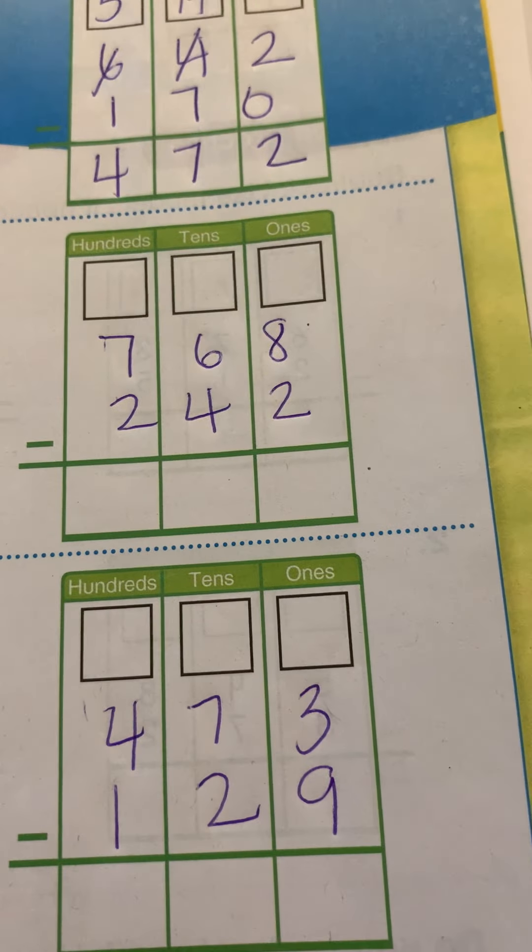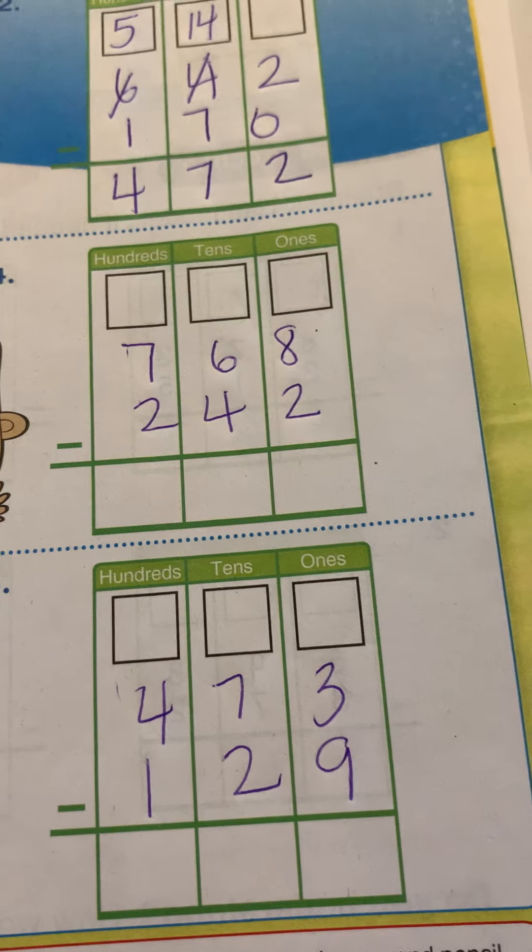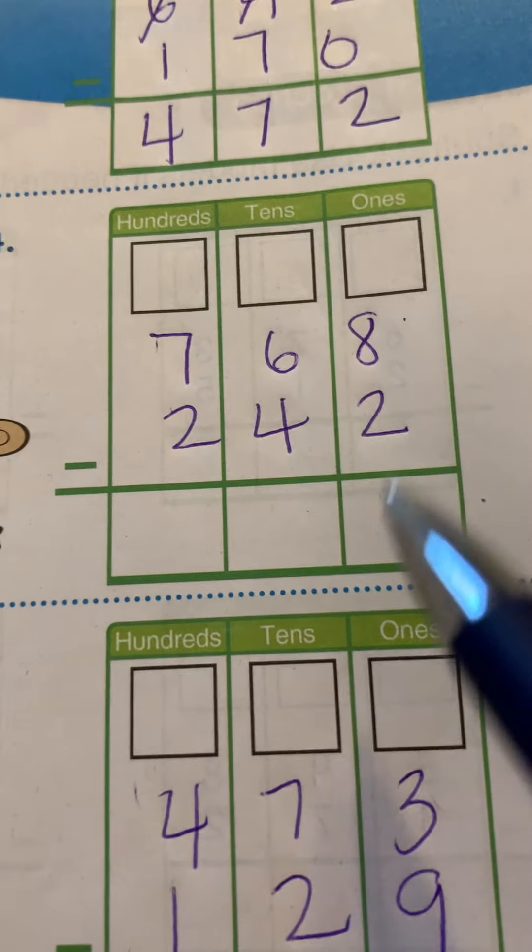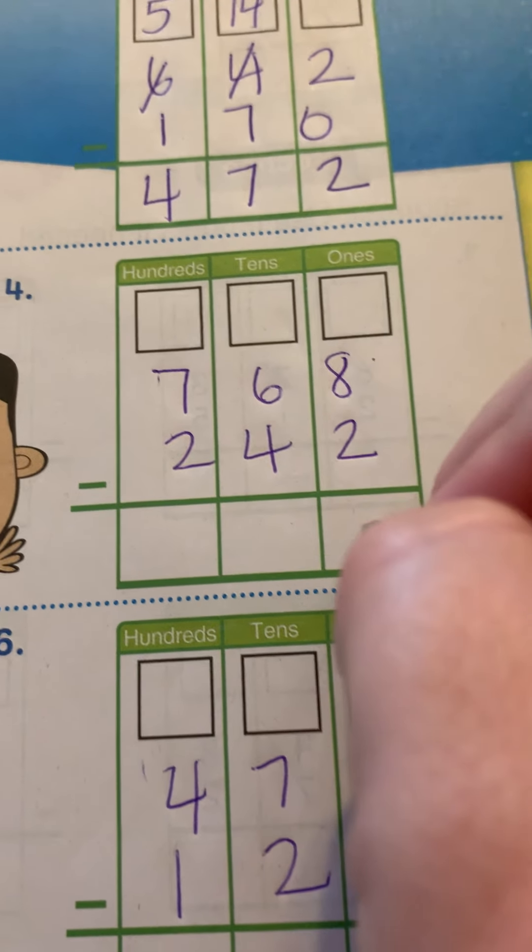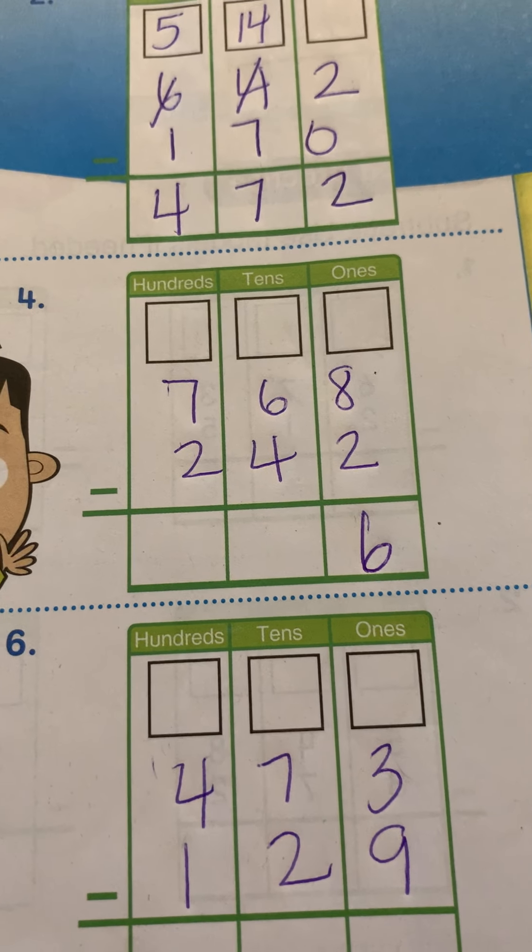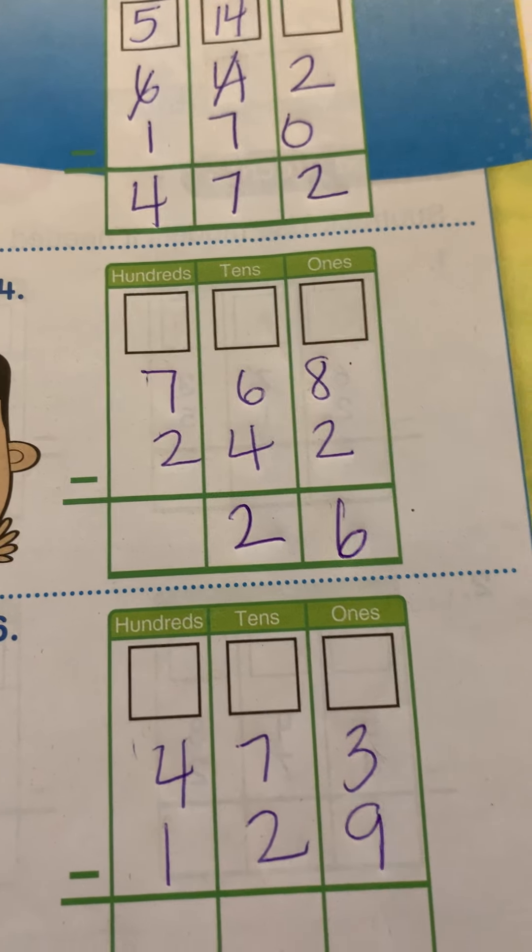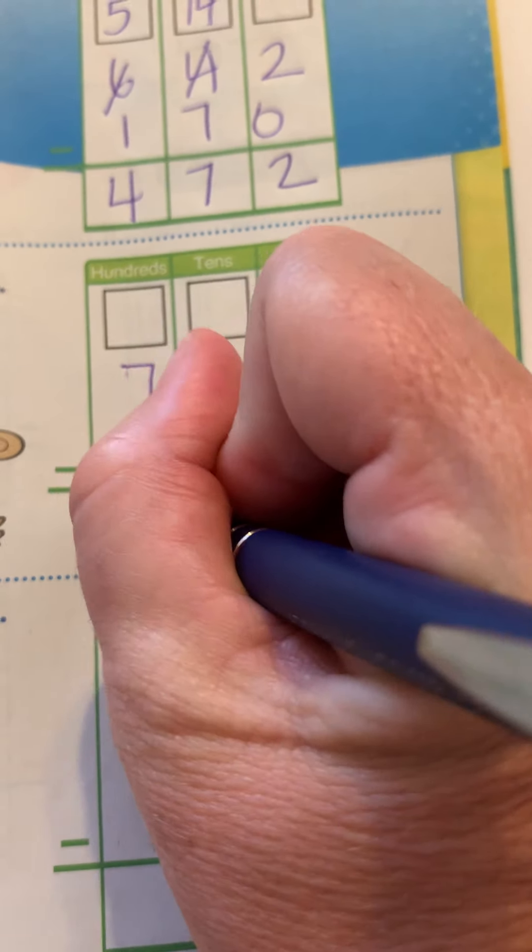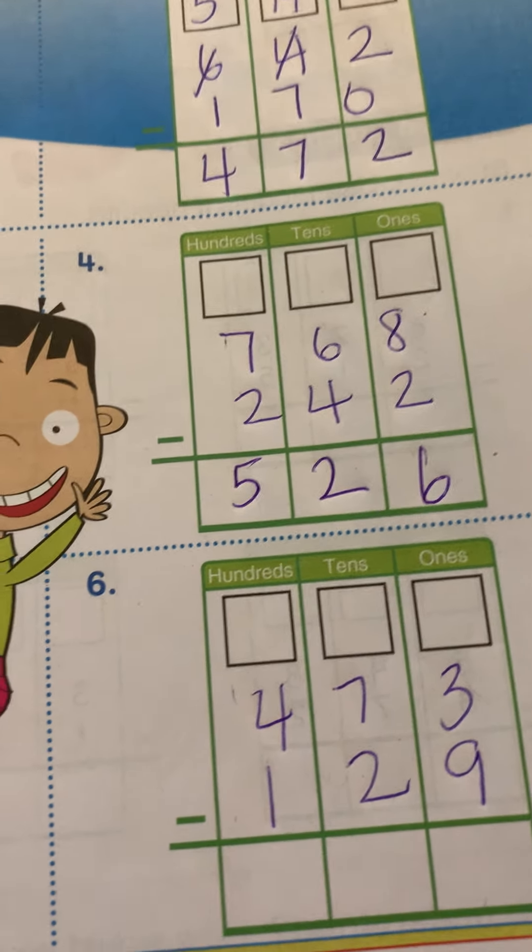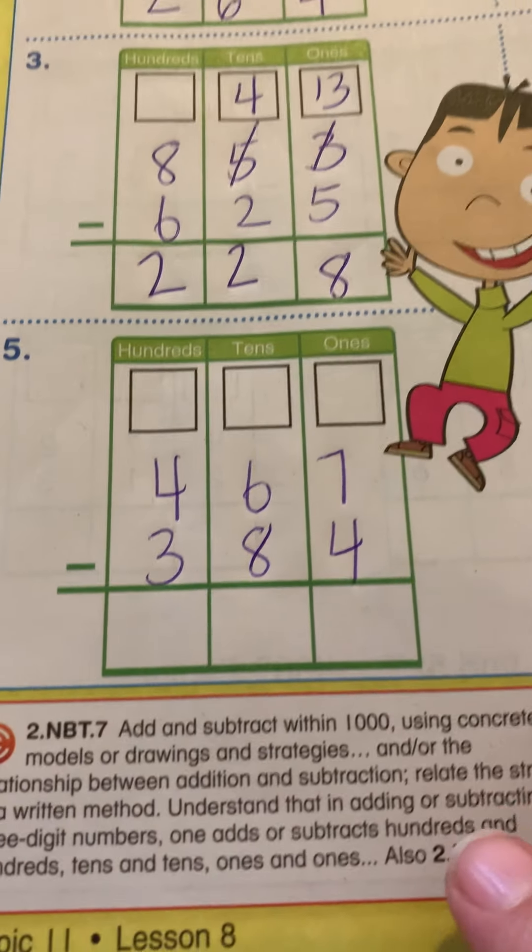Number four. Remember, I'll put it back so you can see the whole thing when we're all the way done. Eight minus two is six. Six minus four is two. And seven minus two is five. And there was no regrouping. So that one was easy, huh? Okay. Number five.